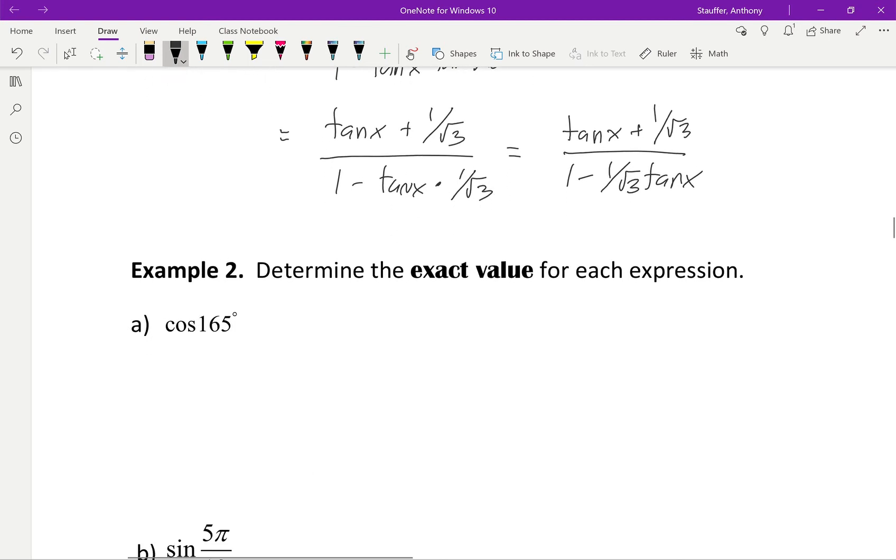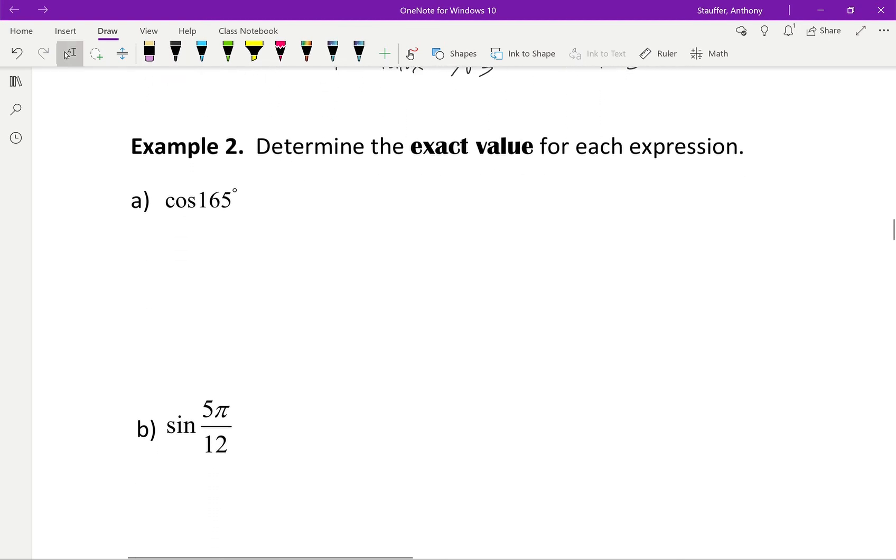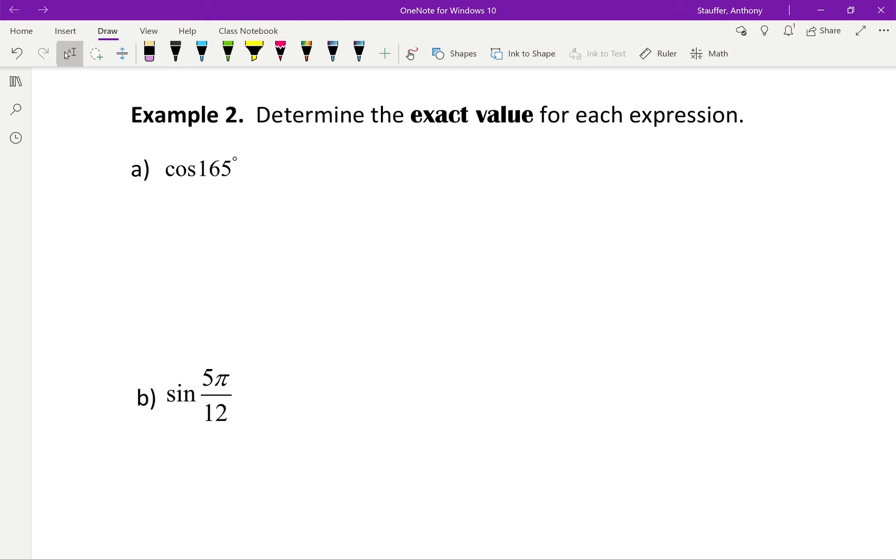Now, realistically, where a lot of the value in these double angle identities and formulas come from is if we have to find the exact value for things that are not on the unit circle. So, if we look at this example right here, where I have the cos 165 degrees, well, 165 is not on the unit circle. But, if I can find two numbers that add up to 165 or subtract to 165 that are on the unit circle, then I can use my double angle identities to get an exact answer.